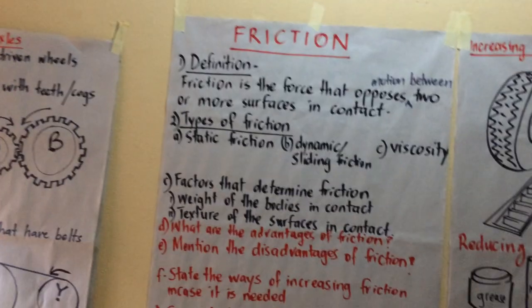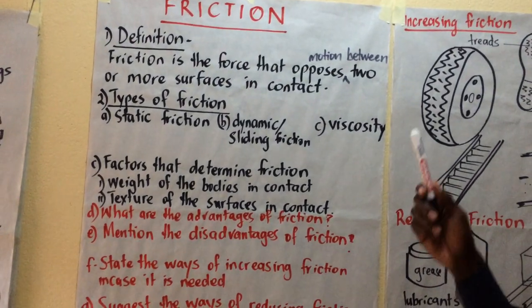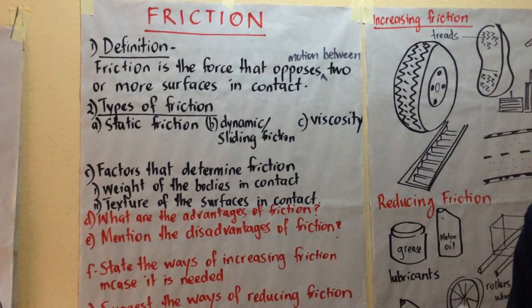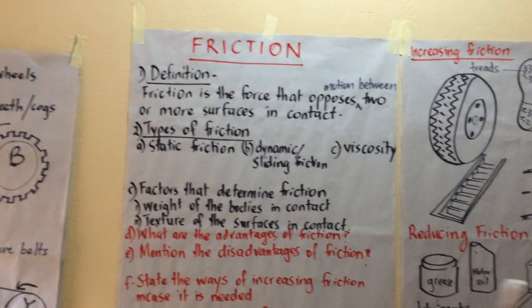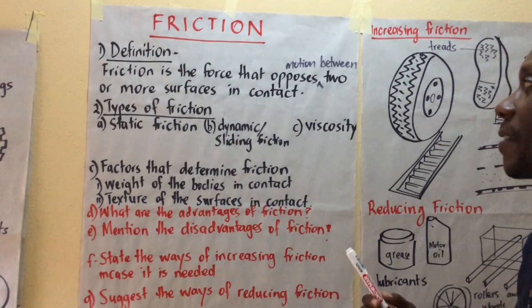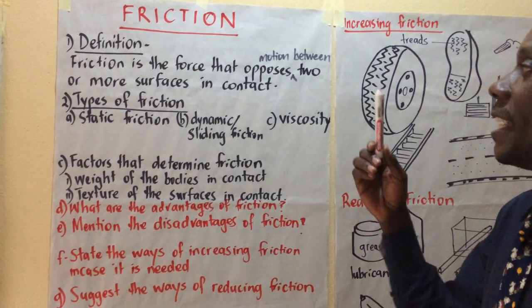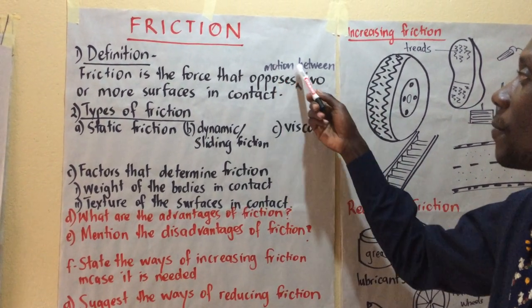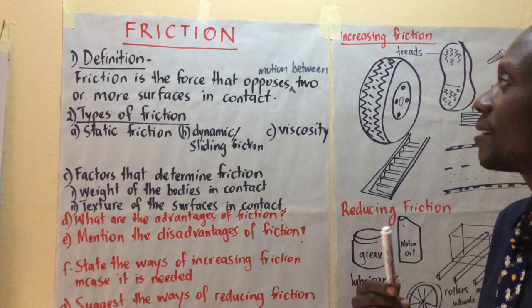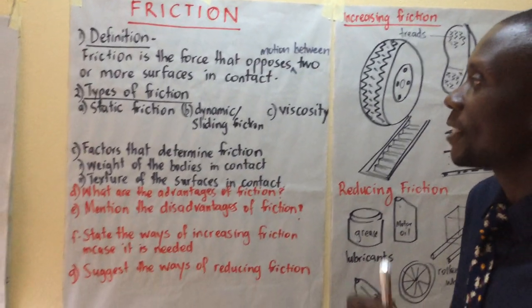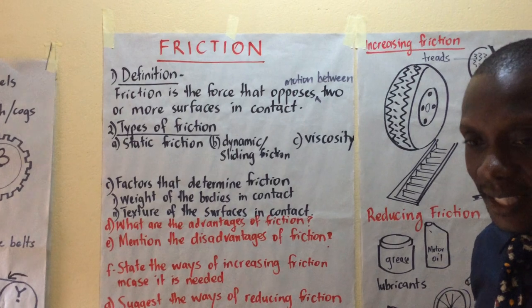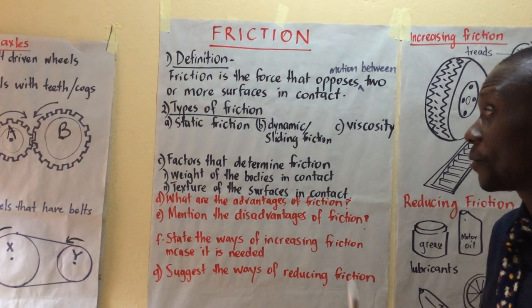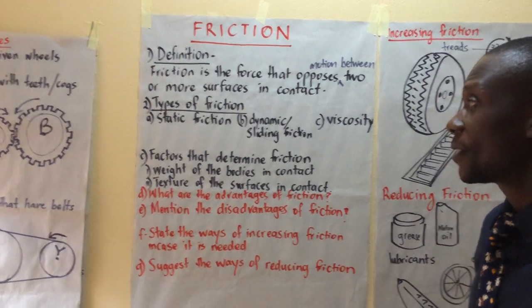Starting with the definition: friction is the force that opposes motion between two or more surfaces in contact. Friction is the force that tends to oppose motion between two or more surfaces in contact. Some say it is the force that opposes movement instead of motion — it is the force that tends to oppose movement between two or more surfaces in contact.